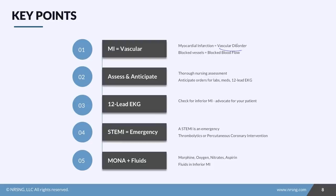Myocardial infarction is a vascular disorder — blocked vessels means blocked blood flow. Remember the delivery truck driver analogy: if they can't get through, the packages don't get delivered. What are we trying to deliver? Healthy oxygen and nutrients to the heart. When you have a patient with chest pain, do a thorough nursing assessment immediately and anticipate ordering cardiac enzymes, medications, and getting a 12-lead EKG done quickly. Then possibly you might be taking them to the cath lab.